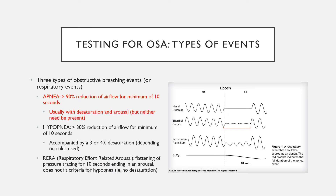There are three types of obstructive breathing events or respiratory events. The first one is called an apnea. In an apnea, basically all airflow obstructs due to airway obstruction. On the tracing on the right, there are two measures of airflow. Right when the vertical dotted line is shown and the breathing event starts, airflow virtually stops — it has to be reduced by at least 90% for us to call it an apnea. This line indicates that you're trying to breathe; it's your chest working to breathe, but there is no airflow. This line indicates that your oxygen level is dropping.